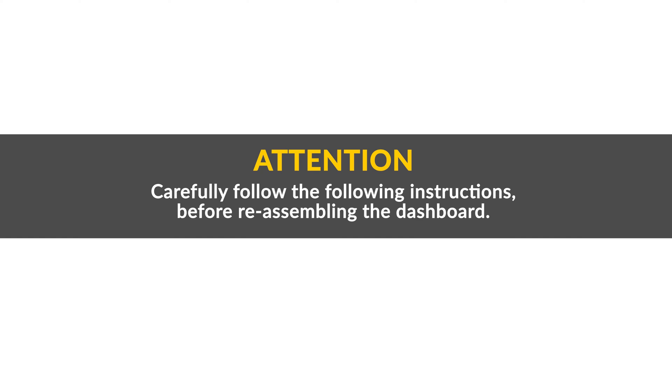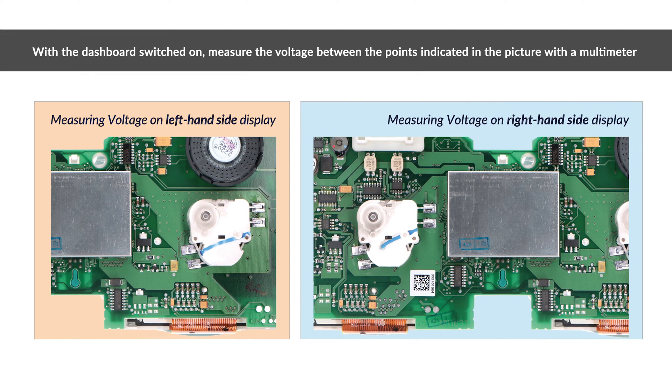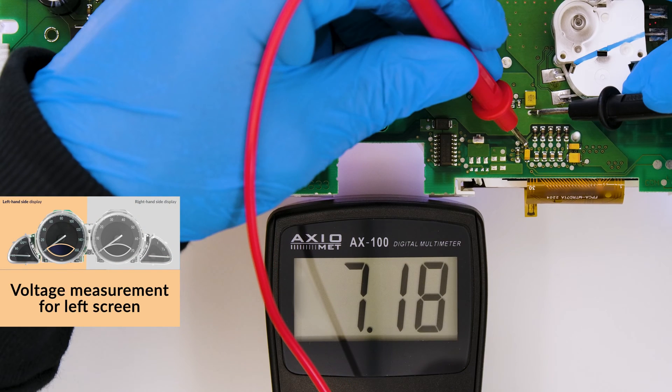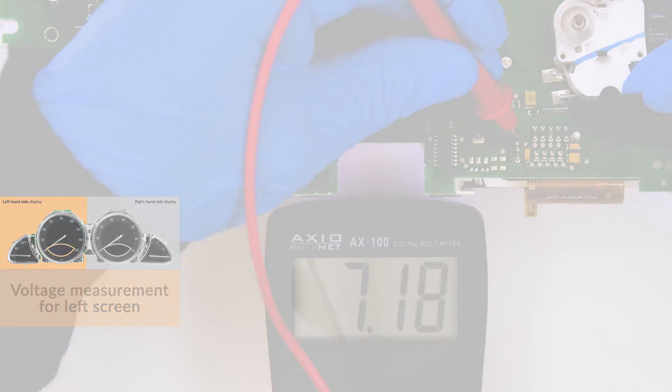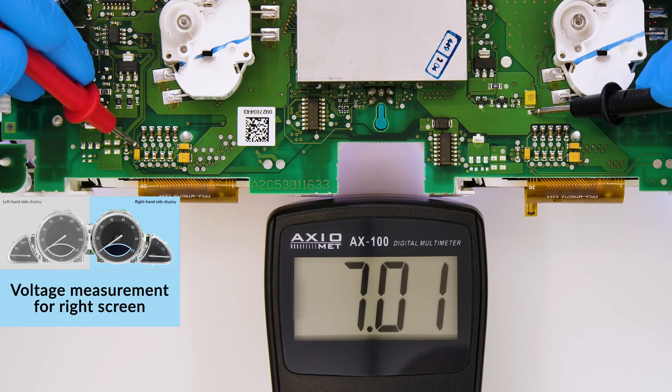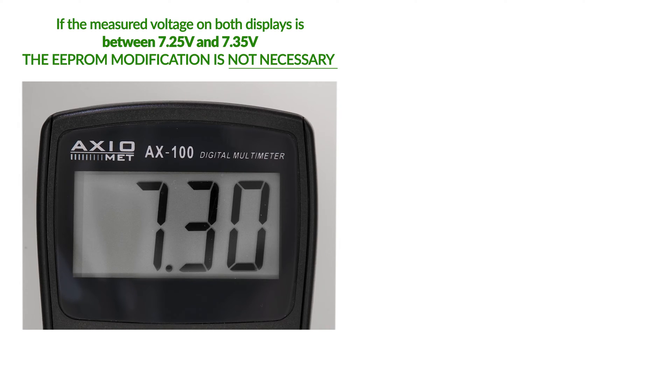Carefully follow the following instructions before reassembling the dashboard. Switch on the panel. With a multimeter measure the voltage on both screens. If it is between 7.25 and 7.35 volts, the problem is solved.